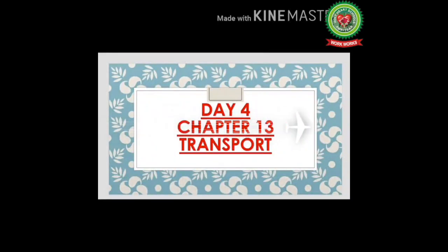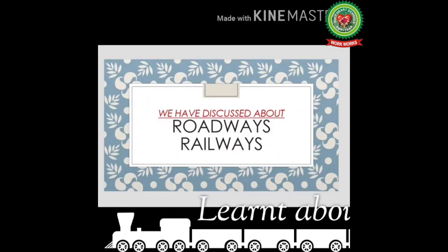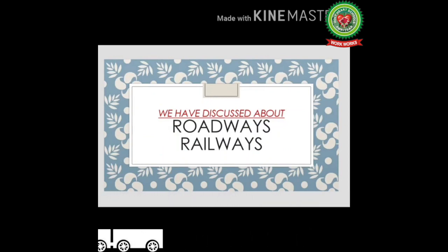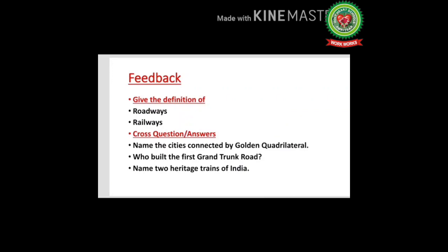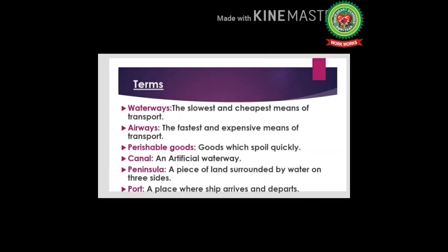Hi students, today is the fourth day of Chapter 13: Transport. In this chapter we have already learned about roadways and railways — types of roads, types of railways. Now I will take feedback of the topics we have already discussed: tell me the definition of roadways and railways, name the cities connected by the Golden Quadrilateral, who built the first Grand Trunk Road, and name two heritage trains of India. Today we will discuss airways and waterways in detail.